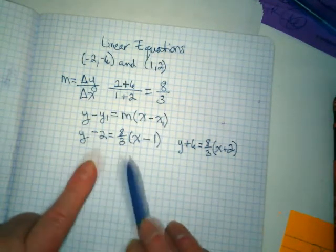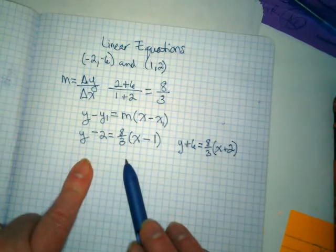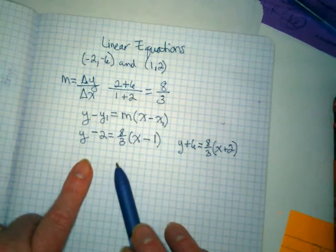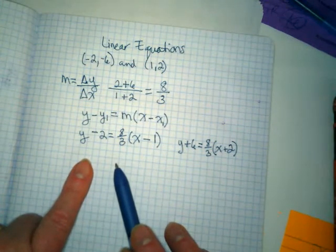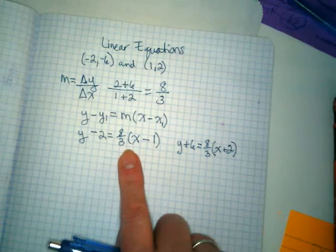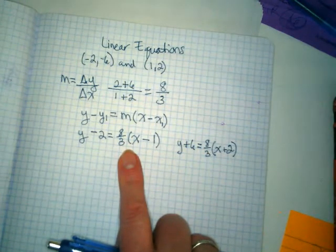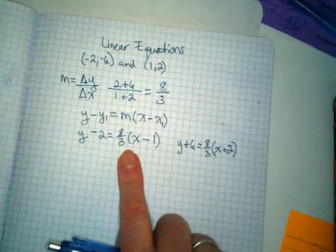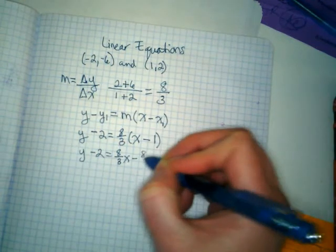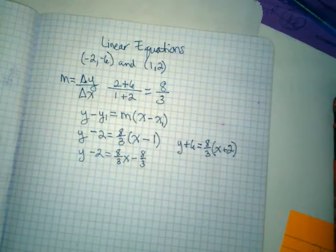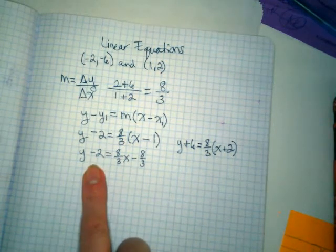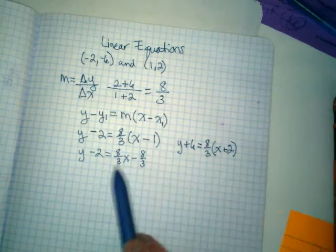So now we need to simplify. If we want to turn this mess into slope-intercept, the Y equals MX plus B we're used to looking at, we need to solve for Y. I know you guys don't love literal equations, but this is why we did it. We're going to solve for Y. First thing I want to do is take care of that 8 over 3 and distribute. Y minus 2 equals 8 thirds X minus 8 thirds. And then what am I going to add to it? 2. Because my goal is to get the Y by itself. Before I can do that, this is slope.